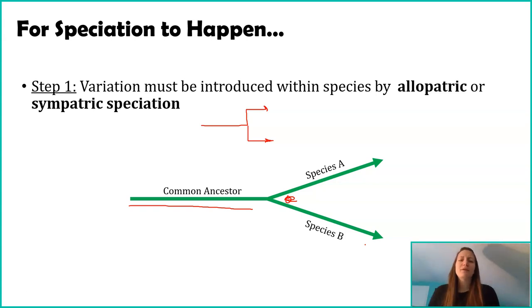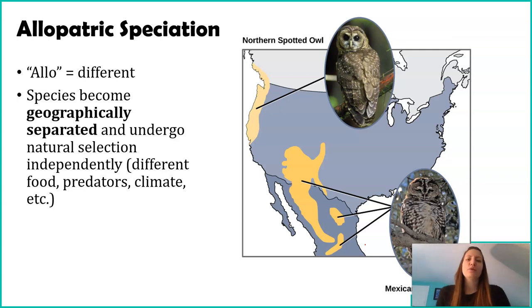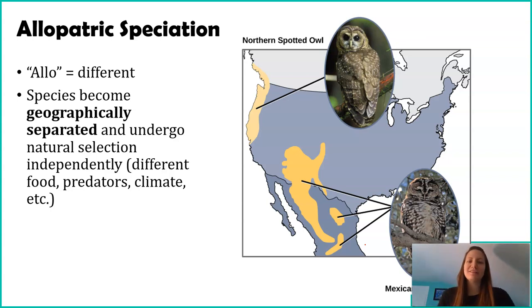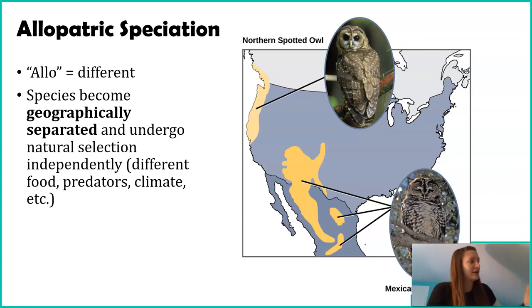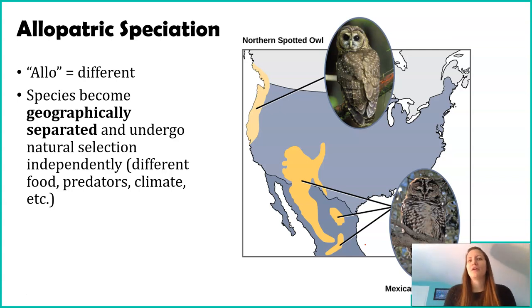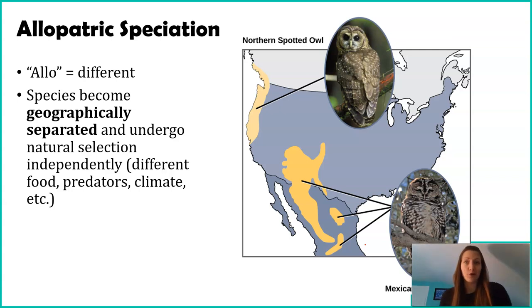Allopatric speciation refers to organisms becoming geographically separated from one another. The prefix 'allo' means different, so allopatric speciation is speciation that occurs with organisms in different locations. If you're in a different location, that population is going to be adapted to their environment differently because there's different climate, food, predators, wind and water patterns. Over time, organisms become better and better adapted for their environment because the ones that aren't don't survive and don't pass their traits to the next generation.